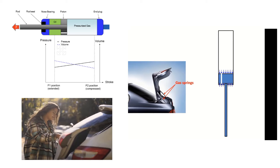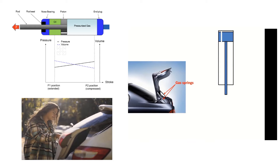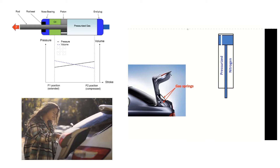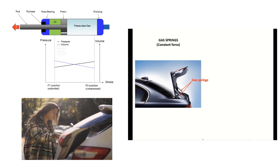Even at an extreme position, there is still some gas acting on the other side, which also exerts force. When you try to retract the cylinder, the nitrogen moves to the rod end, and again on the top side there is some gas acting on the piston area. This is how the gas spring works.